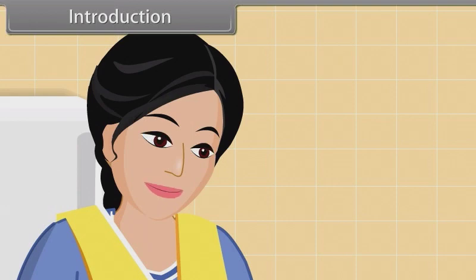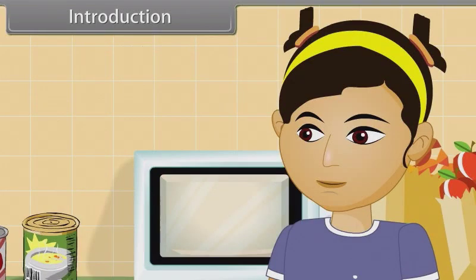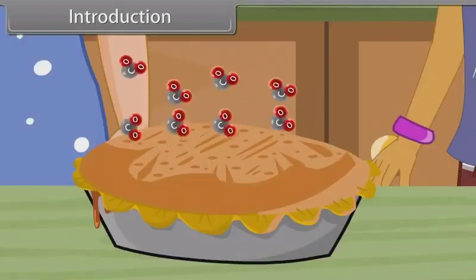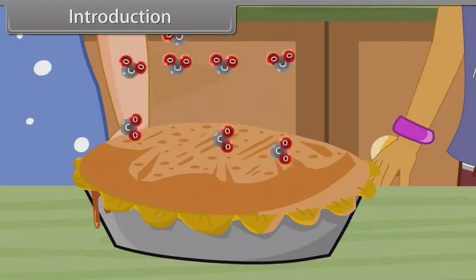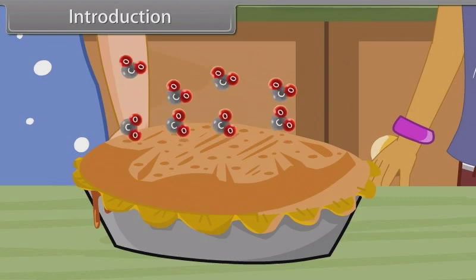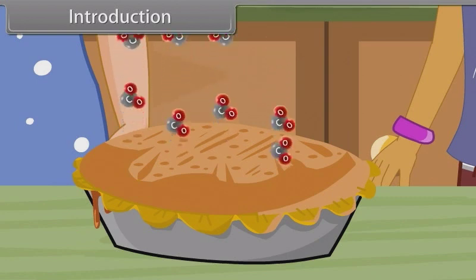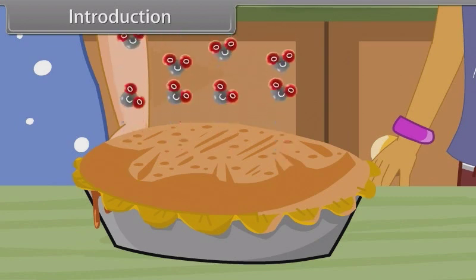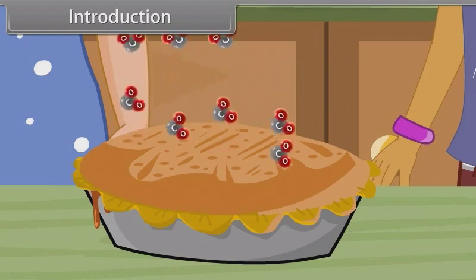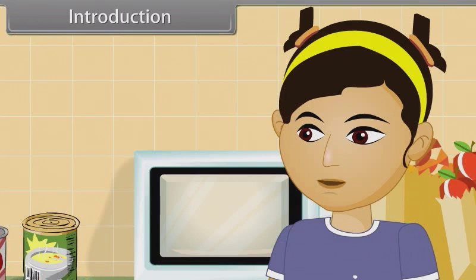I'll tell you. You know we add baking soda in the mixture? When baking soda is heated, it produces carbon dioxide gas. The bubbles in cake are due to escape of carbon dioxide gas. It makes the cake light and fluffy.